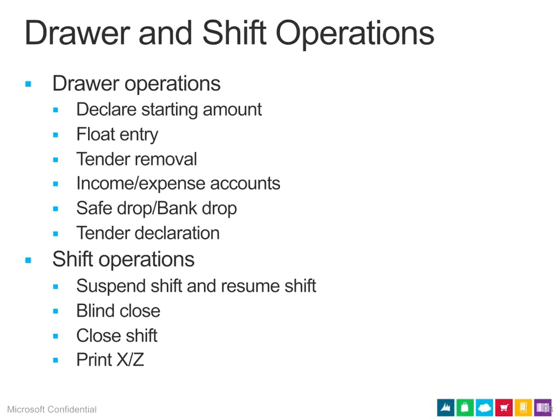Float entry and tender removal are ways to get money in and out of the drawer. Float entry adds more money — say you need extra fives or ones. Tender removal is the opposite: you take money out, perhaps to move it to another drawer. You can do a tender removal from Terminal 1 and a float entry into Terminal 2. All of these are treated as transactions and logged for auditing purposes.